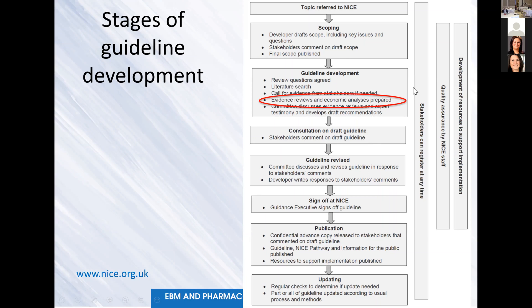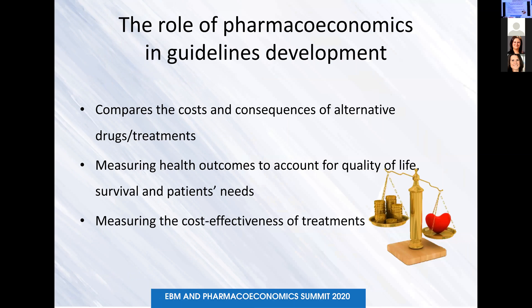My work very much consists in providing evidence on the economic part. NICE has asked me to provide economic models to update a guideline on treatment for stroke, for example. The role of pharmacoeconomics in guidelines development — when talking about drugs — is to compare the cost and consequences of alternative drugs and treatments, measure health outcomes to account for quality of life, survival and patients' needs, and measure the cost effectiveness of these treatments.